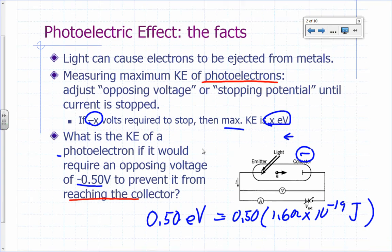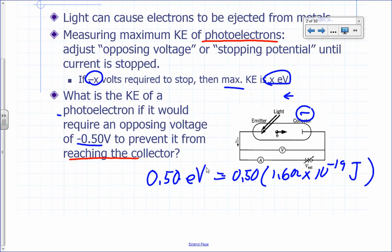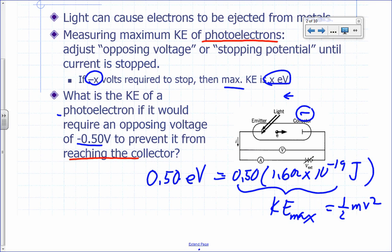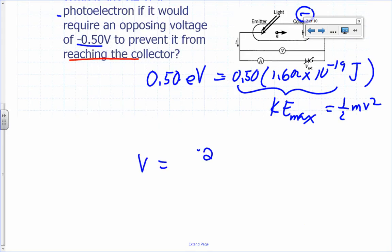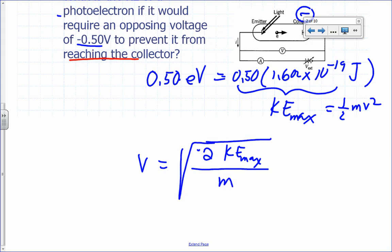So how fast would those electrons be moving? That kinetic energy of the electron — can you solve for the maximum speed? What's the formula for kinetic energy? One-half mass times the square of the speed. So you can solve for the speed: v = sqrt(2 * KE_max / m). That's how you calculate the speed of the electrons as they are ejected from the emitter.